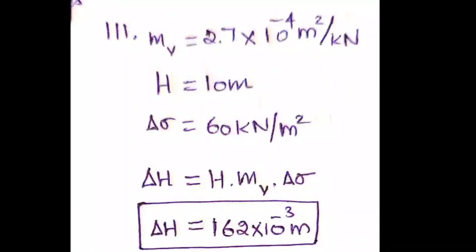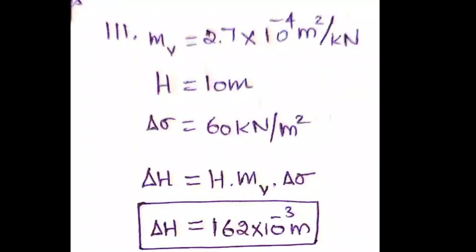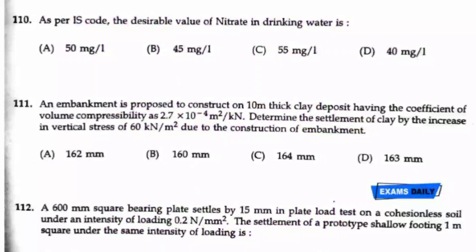The settlement equation is: Δh = h × mv × Δσ. Multiplying all three terms directly gives 162 × 10⁻³ meters, so the answer is 162 mm.